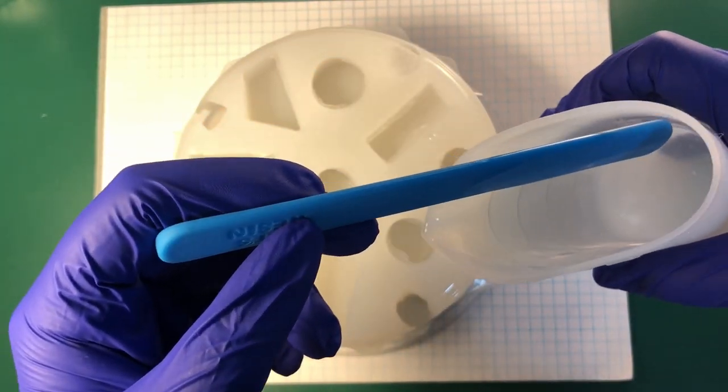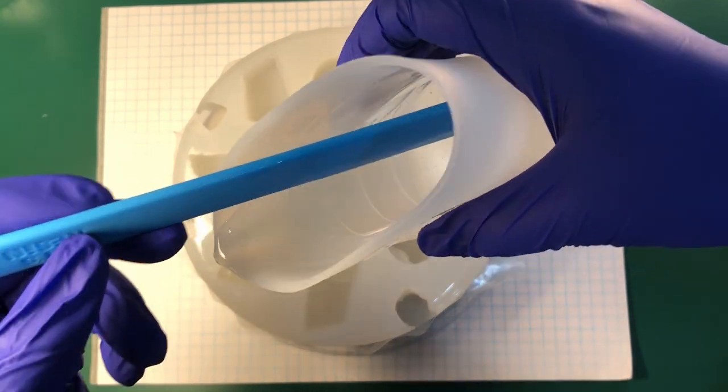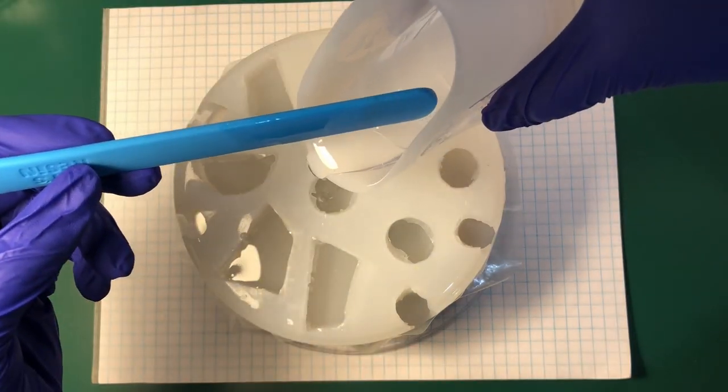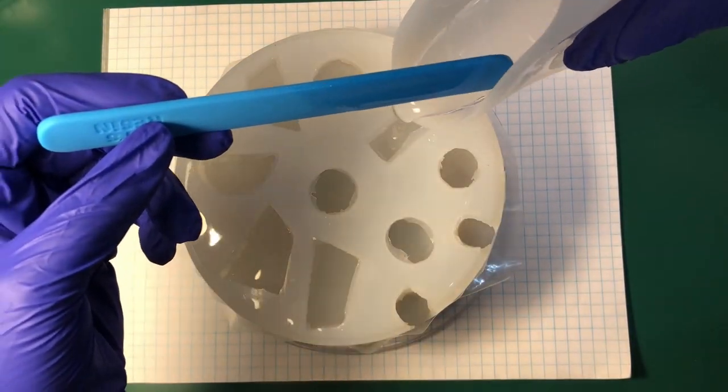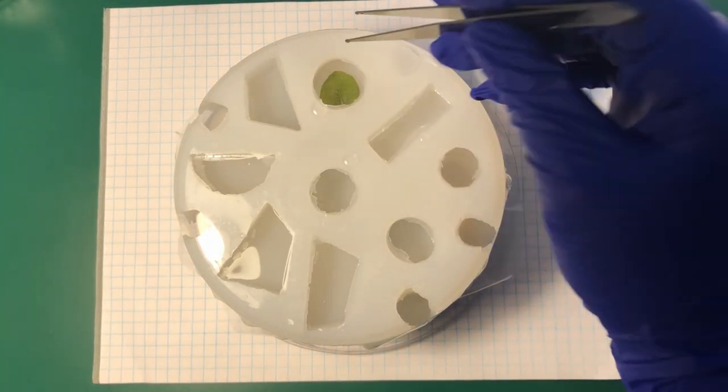Pour a thin layer of epoxy into the mold. Then add your fillers. I just used the eucalyptus leaves.